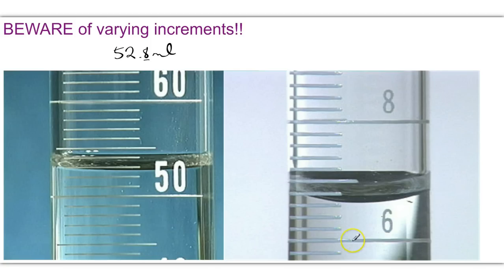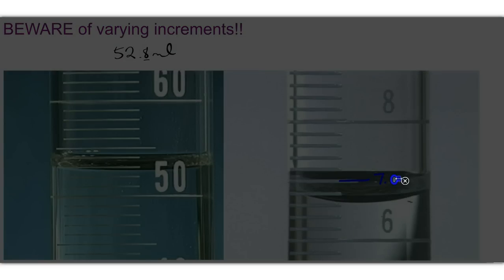Our second example goes from 6 to 8 with a middle point that must be 7. And so when we read the increments here, they go up by 0.2. So this must be 6, 6.2, 6.4, 6.6, 6.8, and then 7.0, and then 7.2, etc.